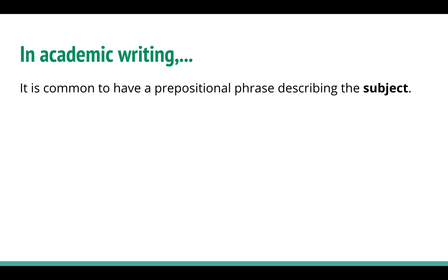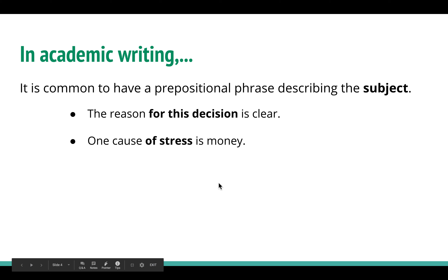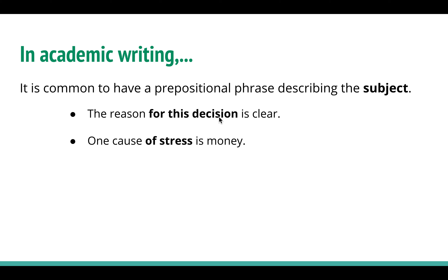In academic writing, it is common to have a prepositional phrase that describes the subject. For example: 'The reason for this decision is clear.' The prepositional phrase 'for this decision' — 'for' is the preposition, 'this decision' is the object — describes the subject 'the reason.' The verb is 'is.' So the prepositional phrase is not describing the verb; it's actually describing the subject.